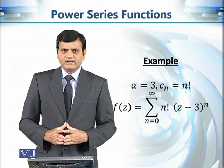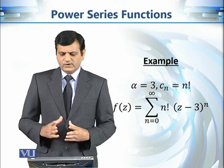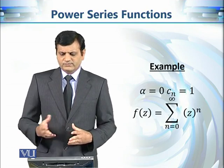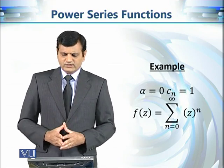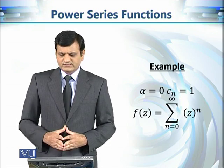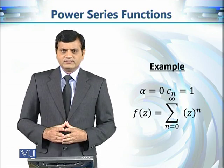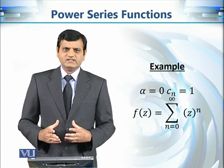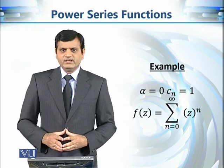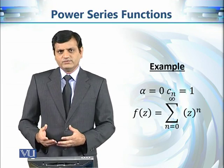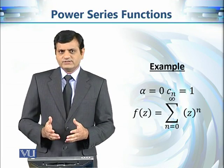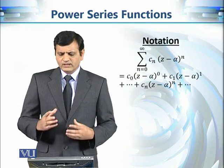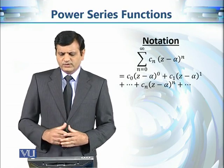For example, if we take α = 3 and cₙ = n!, we get a particular power series. Similarly, we can change the values of α and cₙ in another way. If you focus on the series where z is the variable, you may recognize it as the geometric series, and we already know the conditions under which it converges — imposing that condition on z gives us the domain of this function.